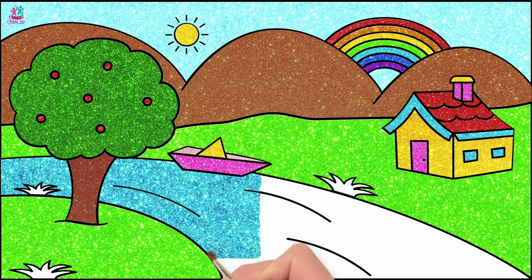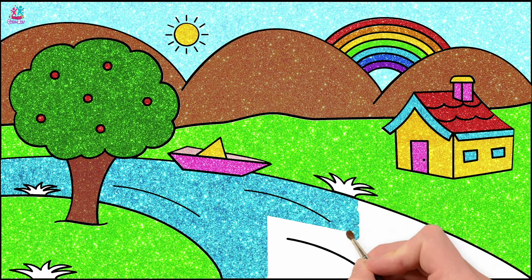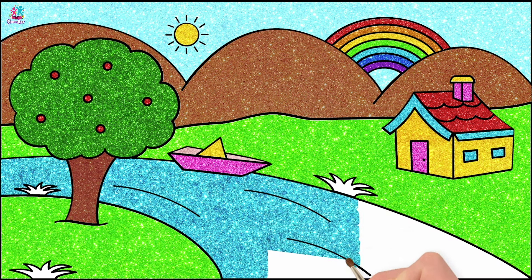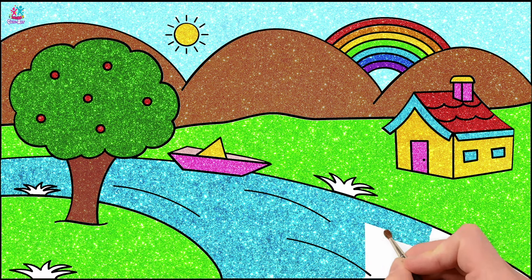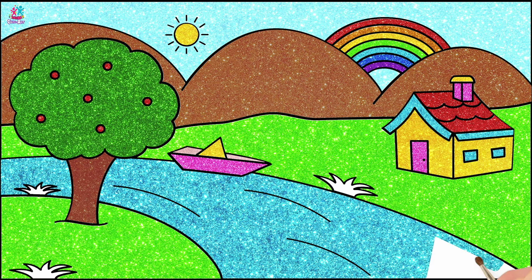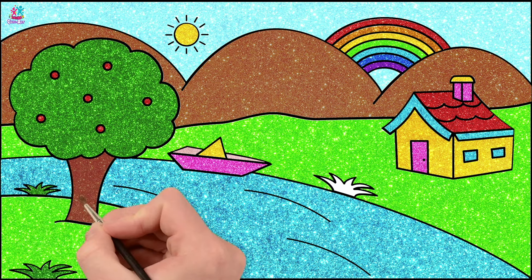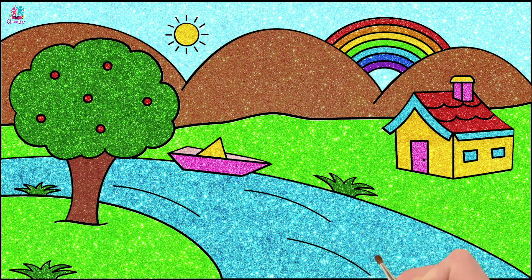Somewhere over the rainbow, way up high — there's a land that I've heard of once in a lullaby. It is absolutely beautiful — maybe you'd find it at the end of a rainbow. Dark green for our tufts of grass, just like the tree. And there you have it — perfect scenery!